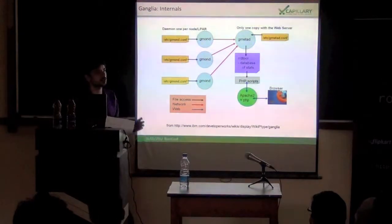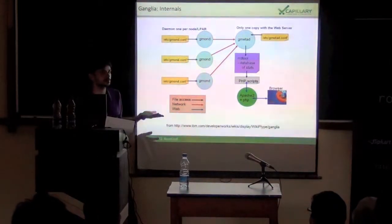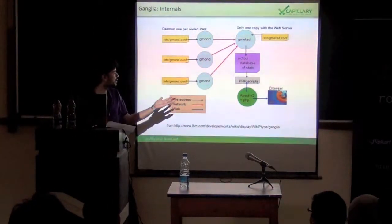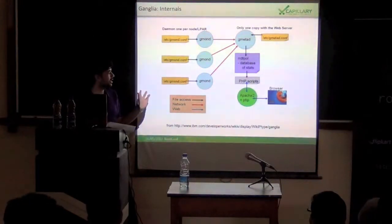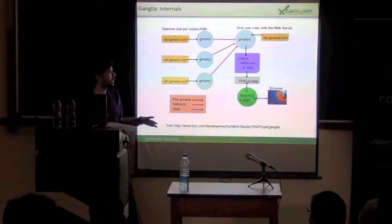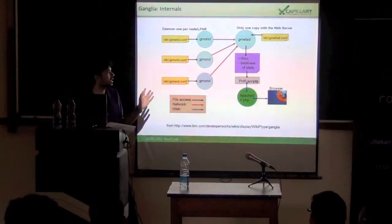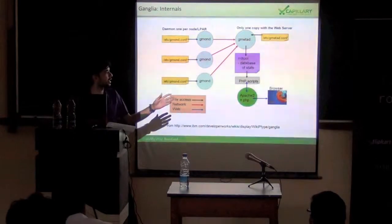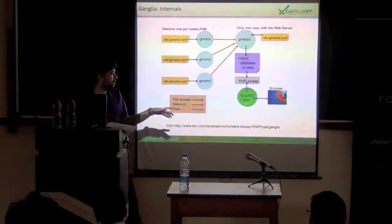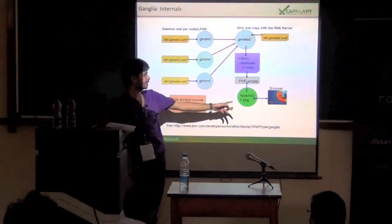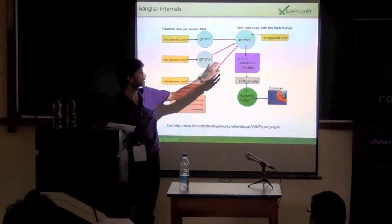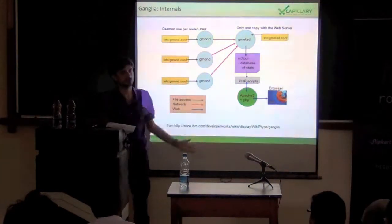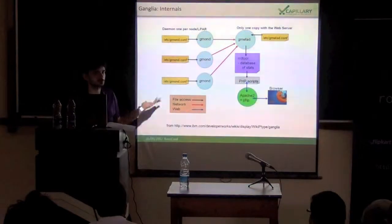GMOND are the monitoring nodes which run on all the servers that we want to monitor. These are very light nodes that only collect data and send it to GMETAD. GMETAD collects and aggregates all the data and stores it onto disk using RRD tool. The GWEB end accesses the GMETAD data and makes it accessible inside the browser.